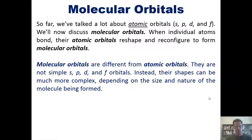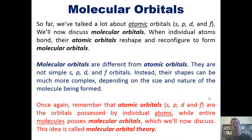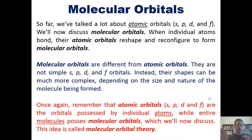S, P, D, and F orbitals are the atomic orbitals we see around individual atoms. When we talk about molecular orbitals, we're talking about all of the orbitals that surround entire molecules — which have multiple atoms in them. Molecular orbitals can have shapes that are much more complex than individual atomic orbitals, depending on the size and nature of the molecules being formed.